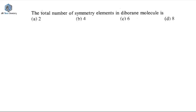We will talk about this question over here, and this was again asked for two marks in CSIR June 2019. It says: the total number of symmetry elements in the diborane molecule.